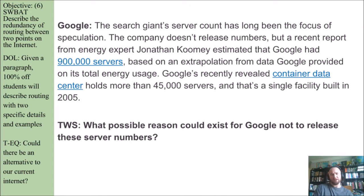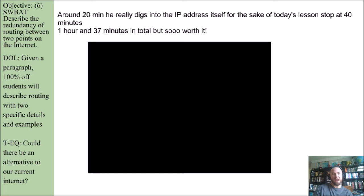One place I didn't mention would be the servers the NSA has or controls — I'm not quite sure what their relationship is with servers, but don't forget the NSA. Think and write: what possible reason could exist for Google not to release these server numbers? Or for that matter, any company — why wouldn't they release how many servers they have and where they have them?